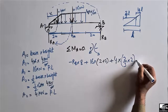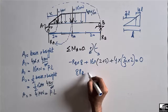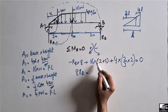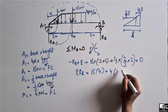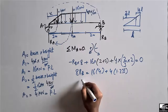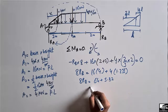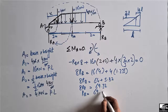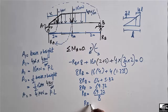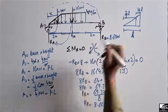Solving the moment equation: 8RB equals 16 times 4 plus 4 times 1.33, which gives 64 plus 5.32, equaling 69.32. Therefore RB equals 69.32 divided by 8, giving RB equal to 8.66 kilonewtons. This is the support reaction at support B.